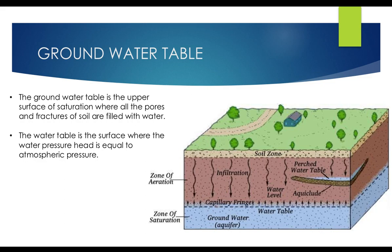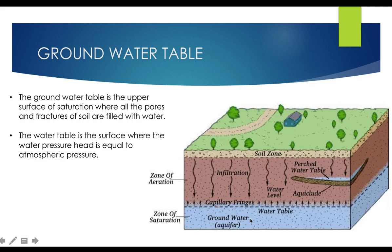Next — groundwater table. You can see the blue part here. There are soil particles with spaces between them. In the groundwater zone, these spaces are completely filled with water, unlike the upper zone where pores may be filled with air or soil moisture. The groundwater table is the upper surface of saturation where all the pores and fractures of soil are filled with water. To drill a well and get water, you have to reach this level.